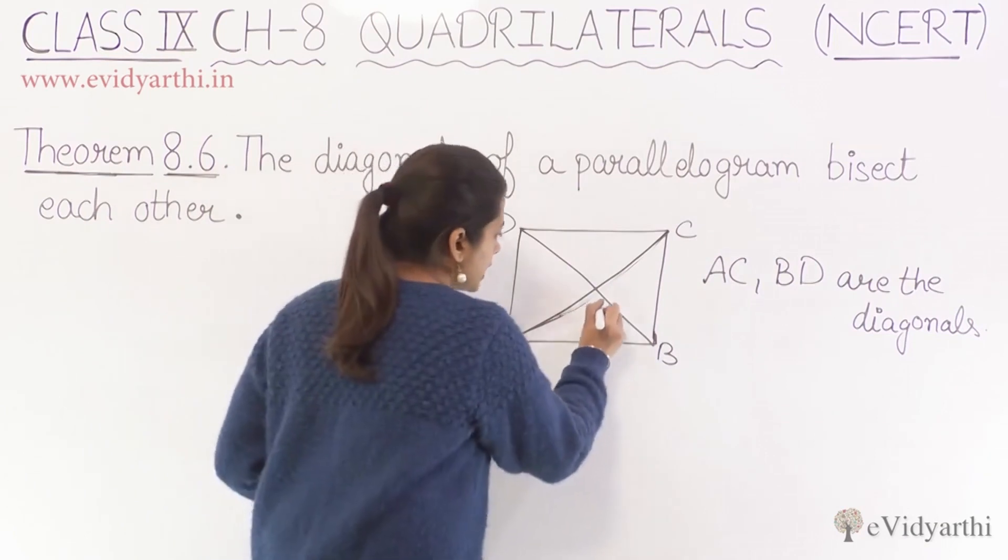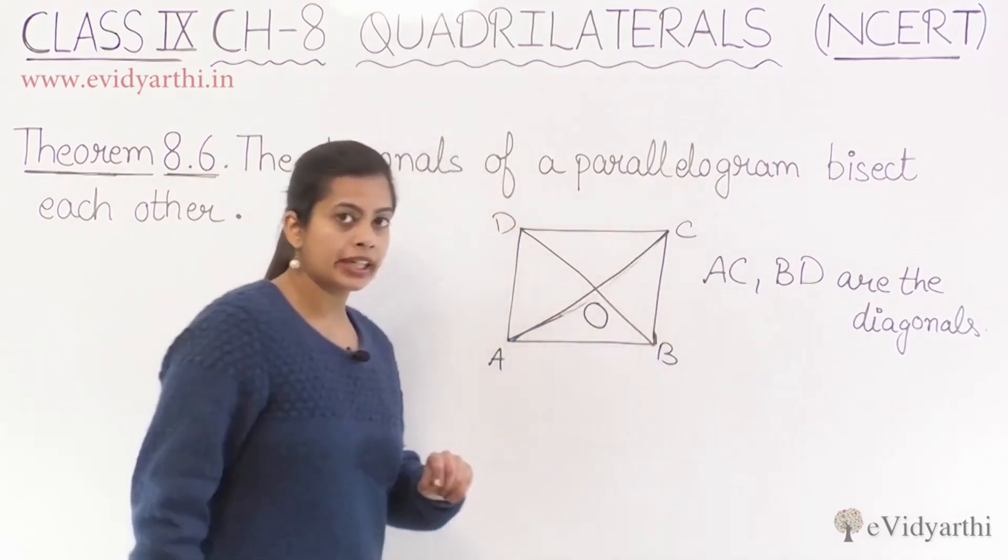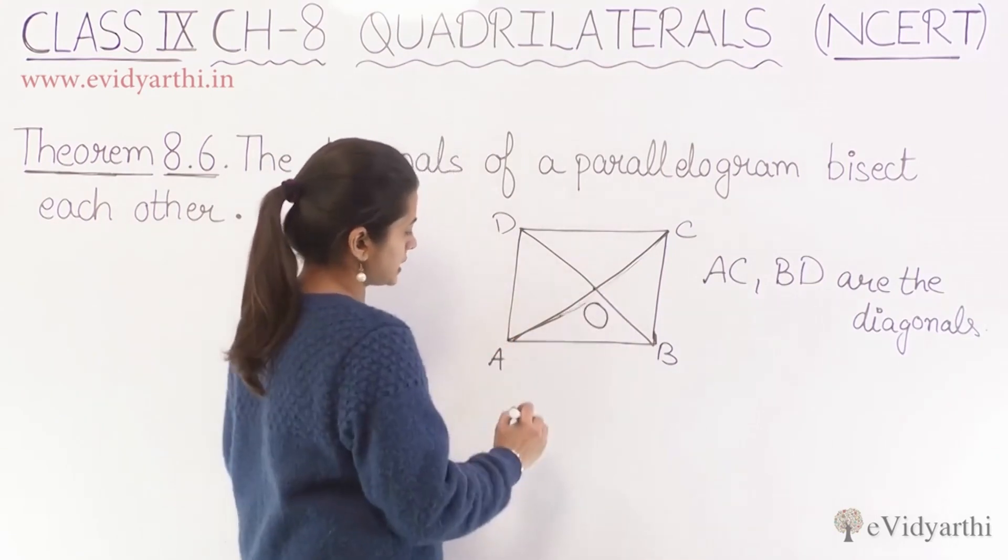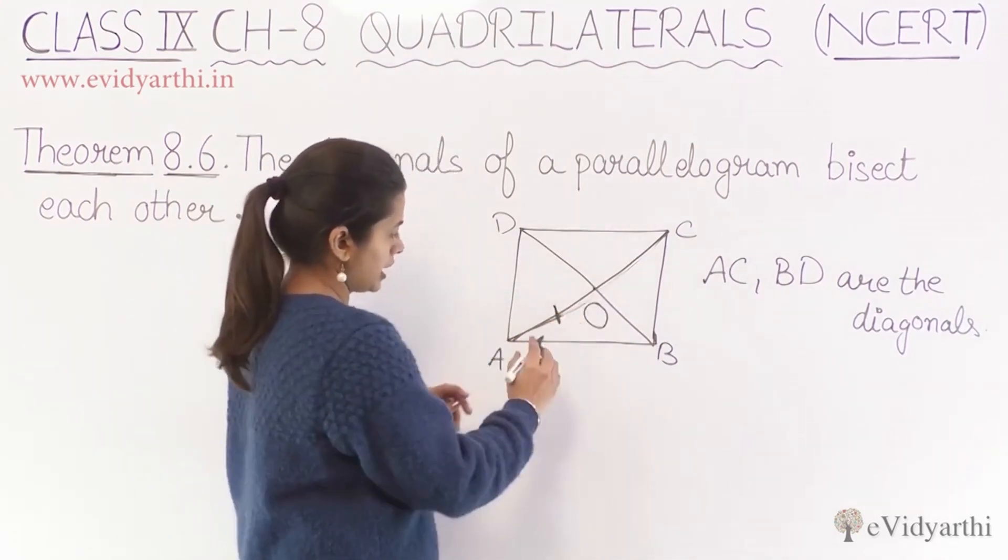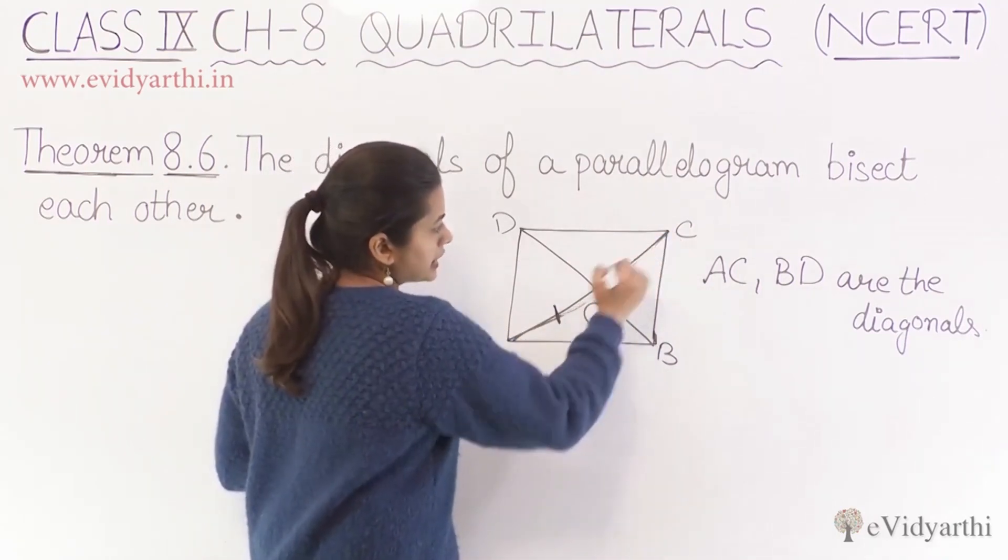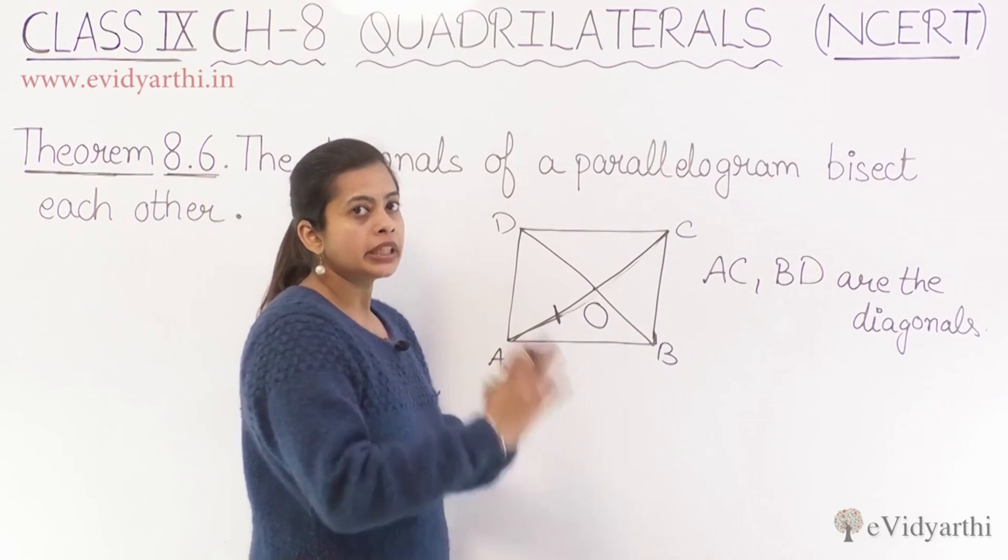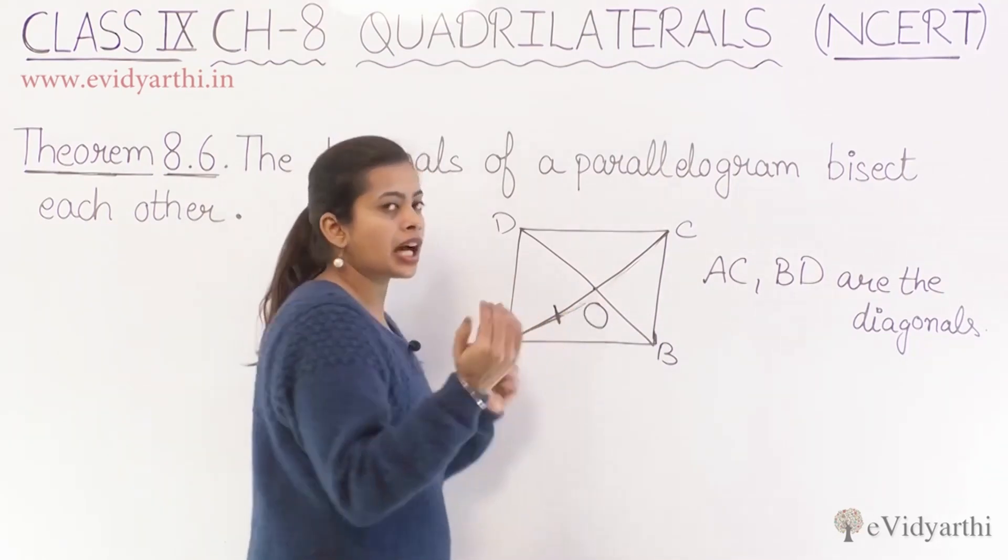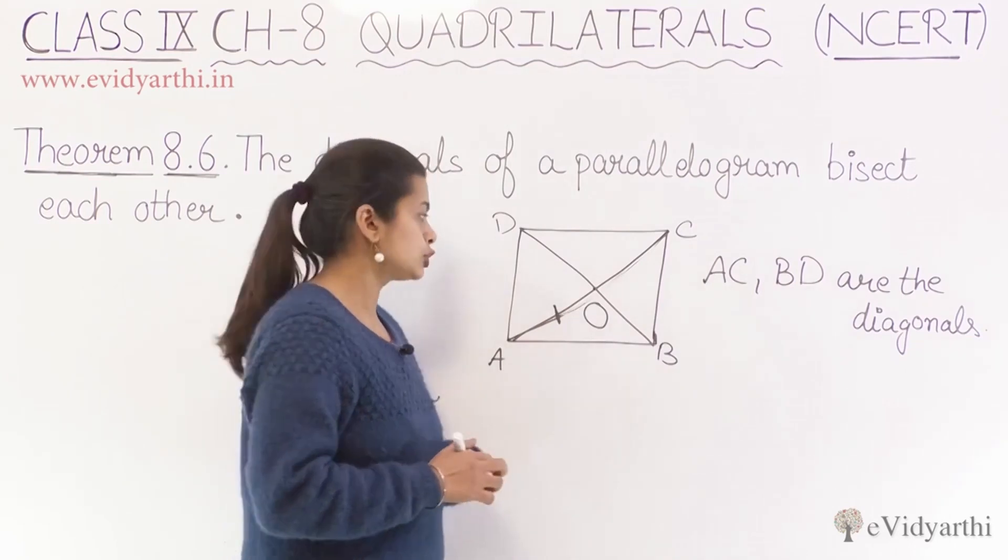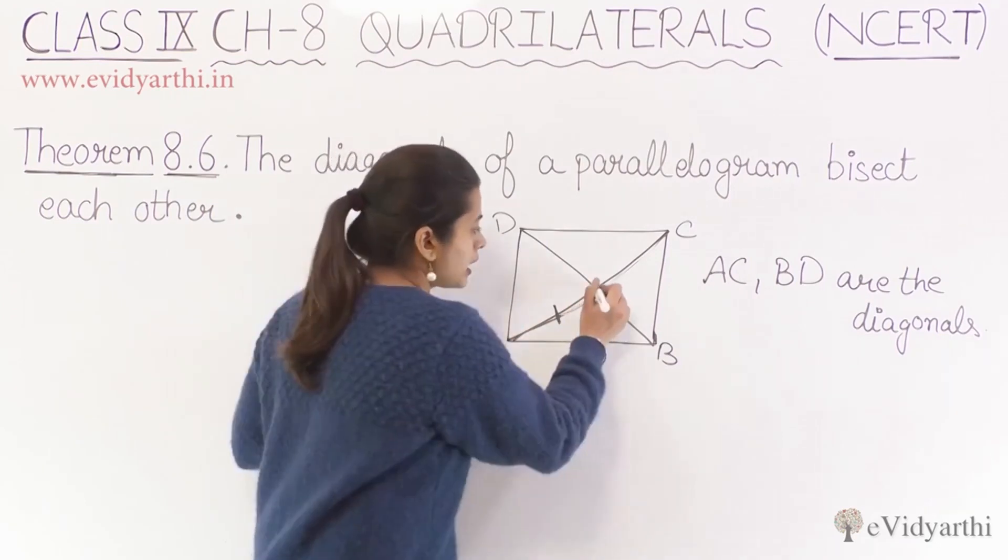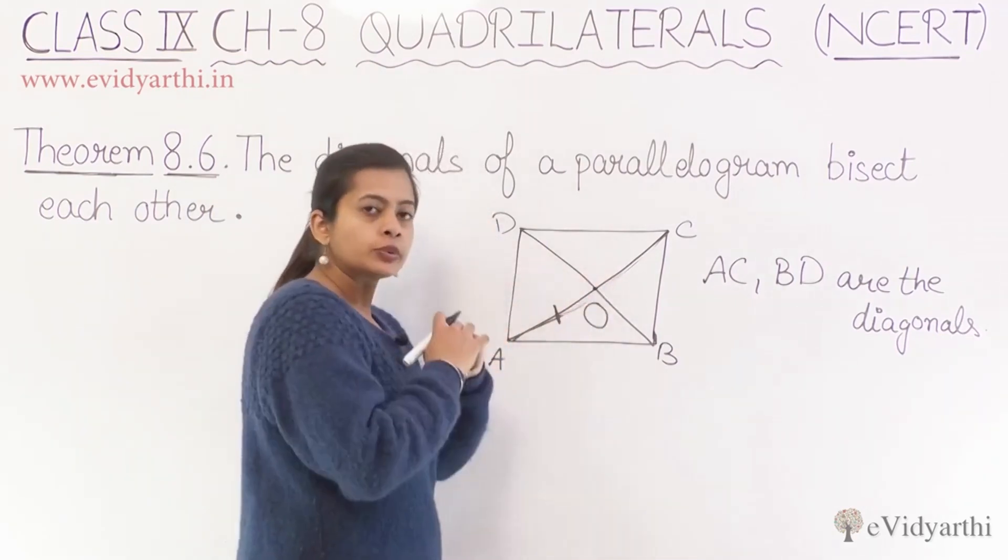That the diagonals will bisect each other. What does bisection mean? Bisection means that there will be a midpoint. If I measure the length from A to O and from O to C, they will both be equal. So the point where our diagonals intersect, we call that point O.